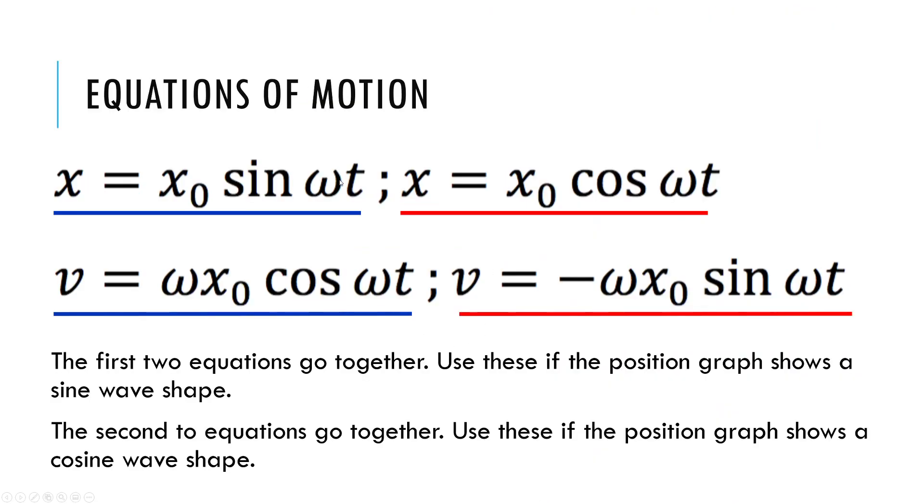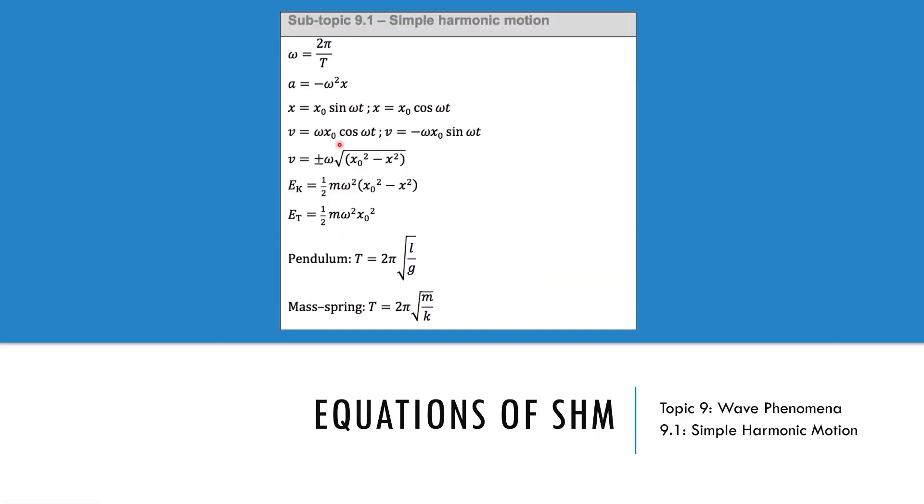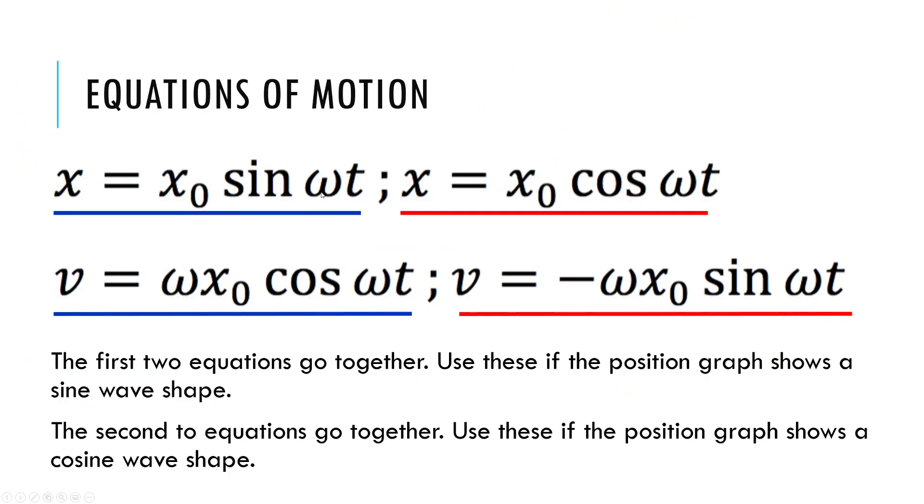So those are three equations. Now, the thing that's tricky is how do I know which one to use? Because this is how they write it in the data booklet. They just give you all this stuff next to each other. Well, that's because the IB knows the IB doesn't expect you to do calculus. And so it just depends on your initial conditions. So what you want to do, here are the tips for using these equations. They go together. So the equations on top of each other go together. So the one we looked at is if our displacement is a sine function, then the velocity is a cosine function. So these two would go together. So it depends on your starting position.